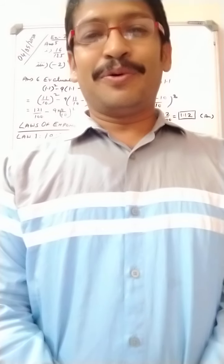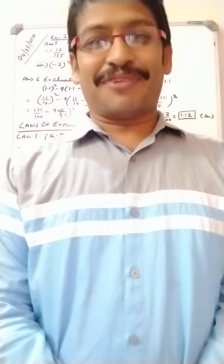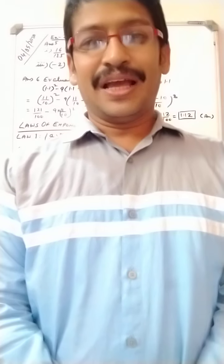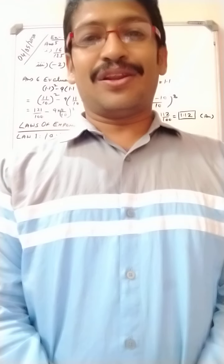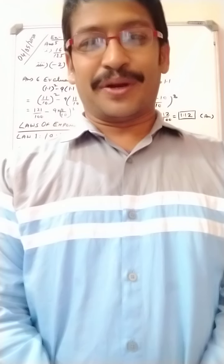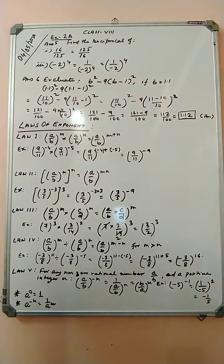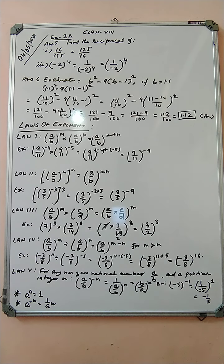Students, in this video we will be going through question number five and six of exercise 2a, as well as laws of exponent. Question five: find the reciprocal of the following. Part one: 16 by 125.